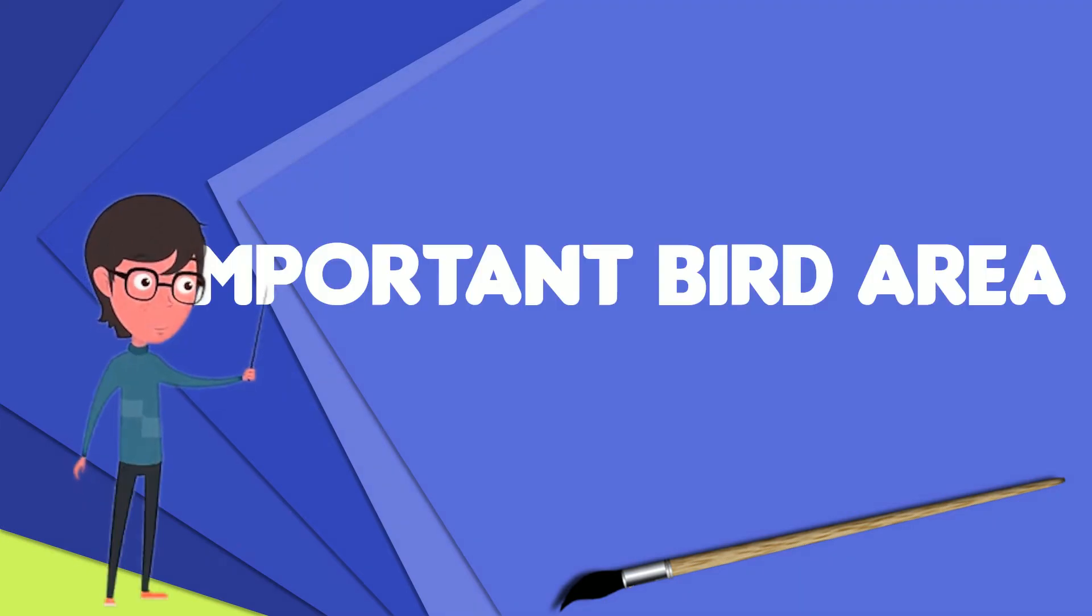An Important Bird and Biodiversity Area is an area identified using an internationally agreed set of criteria as being globally important for the conservation of bird populations. IBA was developed and sites are identified by BirdLife International. Currently there are